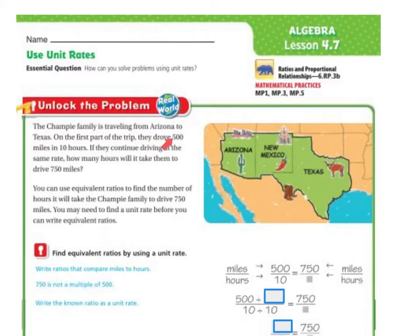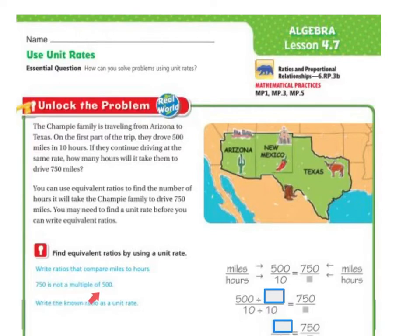So if I drove 500 miles in 10 hours, if I divide the top and the bottom by 10, I'll find the unit rate — how much it was for one hour. To find the equivalent rate, write the ratio that compares miles to hours. 750 is not a multiple of 500, so we need to write the known unit rate. So we have 500 miles for every 10 hours.